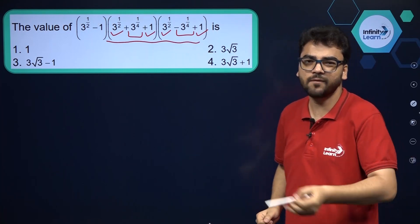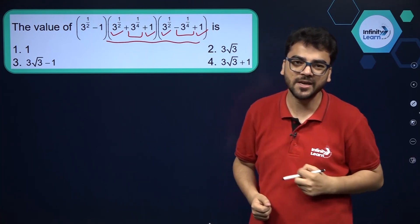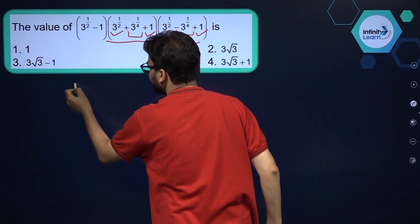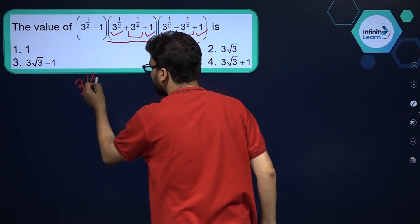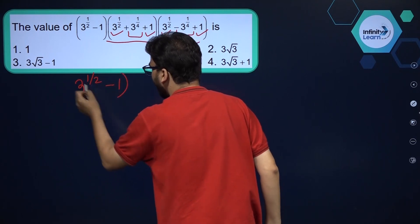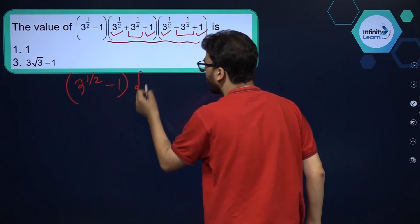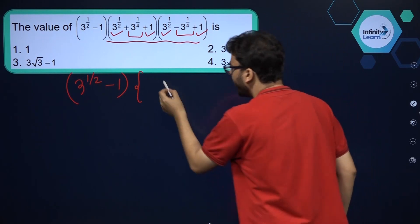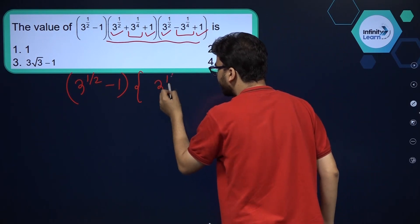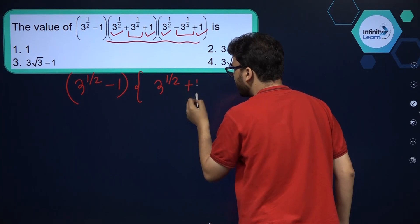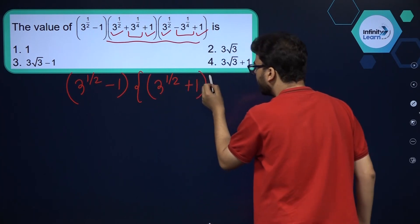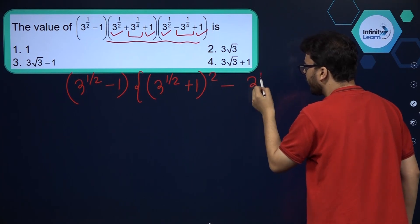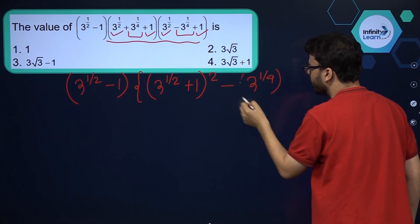So let's use the formula a plus b into a minus b equals a square minus b square. This will remain as it is: 3 raised to the power 1 by 2 minus 1, and over here we can use the formula a square minus b square, where in place of a we write 3 raised to the power 1 by 2 plus 1 the whole square, minus 3 raised to the power 1 by 4 the whole square.